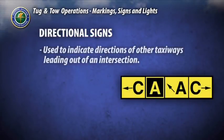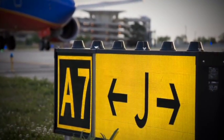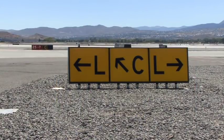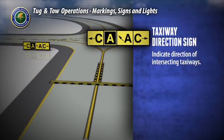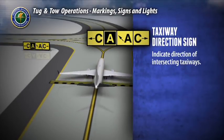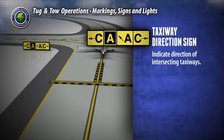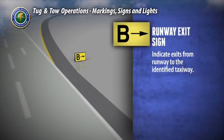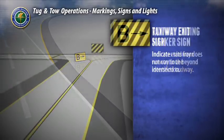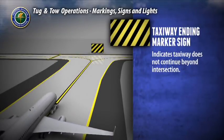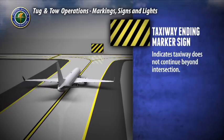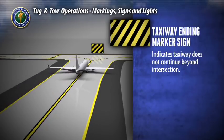Directional signs are used to indicate directions of other taxiways leading out of an intersection. These signs incorporate black inscriptions on yellow backgrounds and always contain arrows. Taxiway direction signs indicate the direction of intersecting taxiways — for example, taxiway Charlie is to the left and right, while Alpha, the taxiway on which you are currently located, continues ahead and to the left. Runway exit signs are used on runways to indicate exits to the identified taxiway. The taxiway ending marker sign indicates that the taxiway does not continue beyond the intersection and will be located on the far side of the intersection.